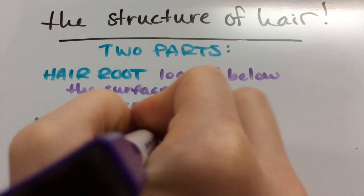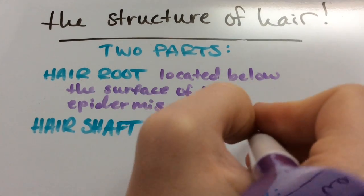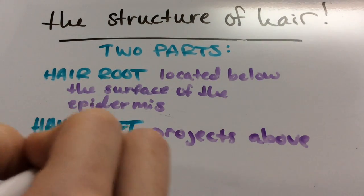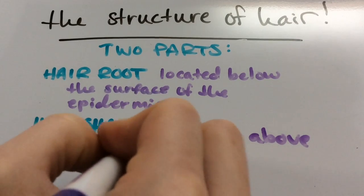The hair shaft is what you can actually see - the portion above the epidermis, which is the outer layer of the skin.